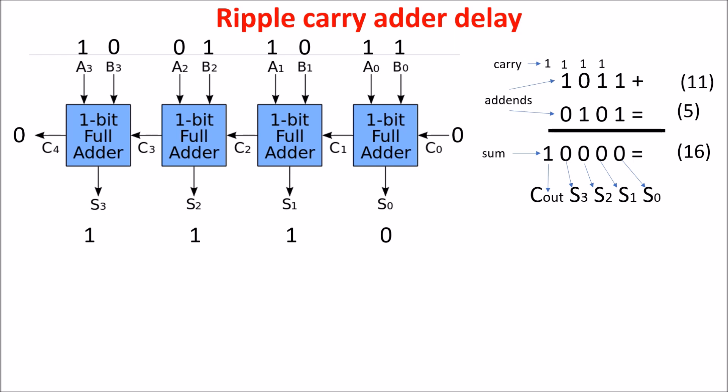So we need an extra time for S1 in respect to S0, because it has to wait the carry 1, and after another gate time, we finally have the right S1. The same for S2, which has to wait C2 and so on, till the carry out C4.